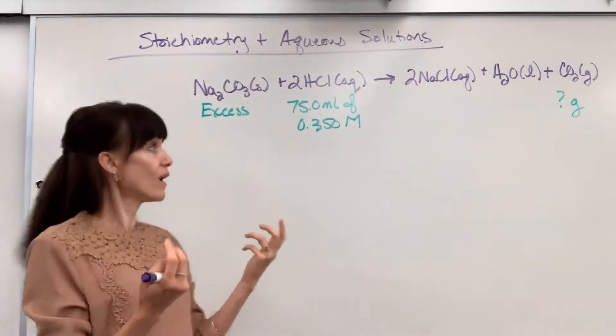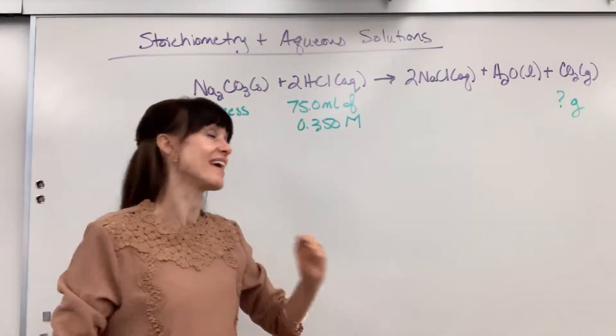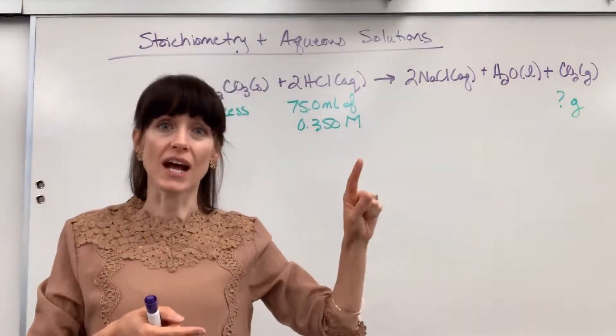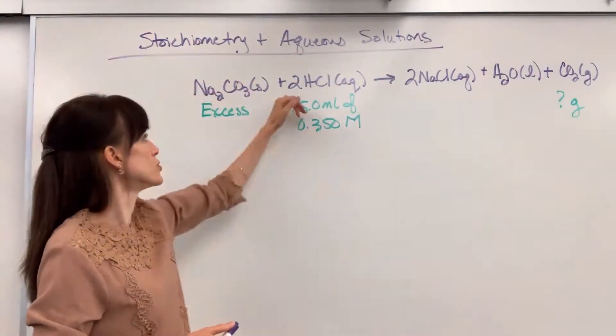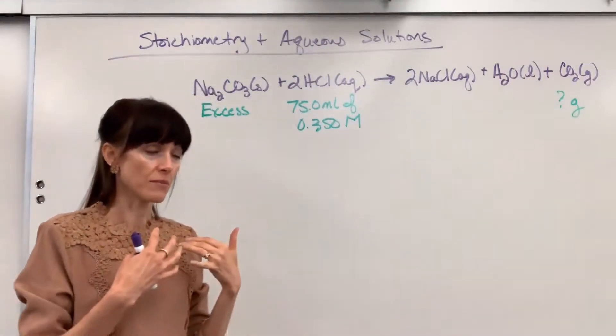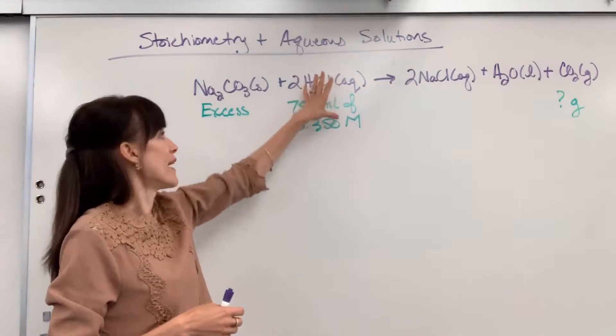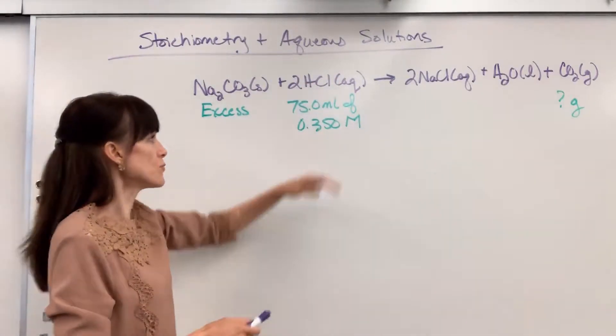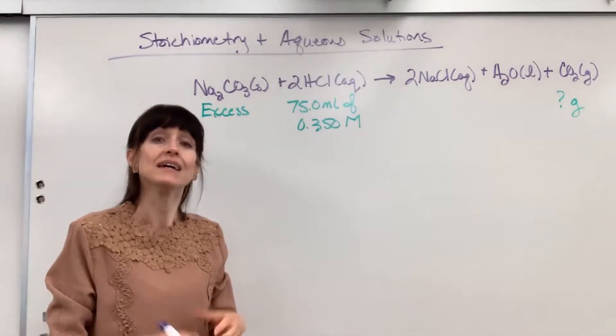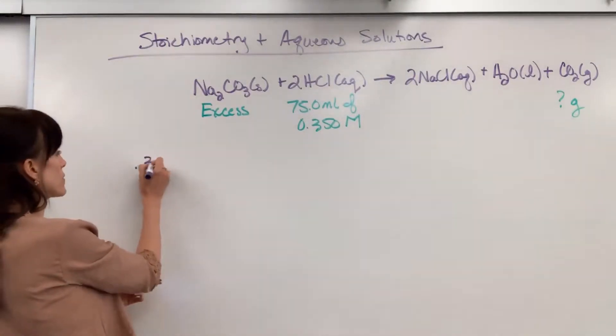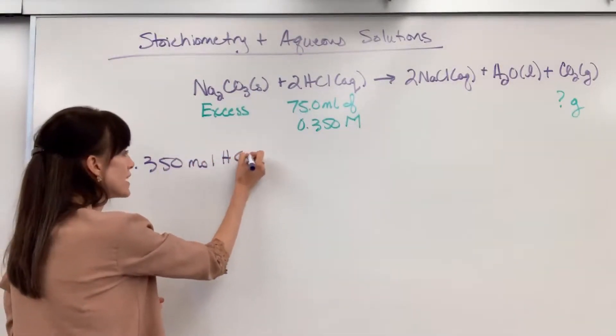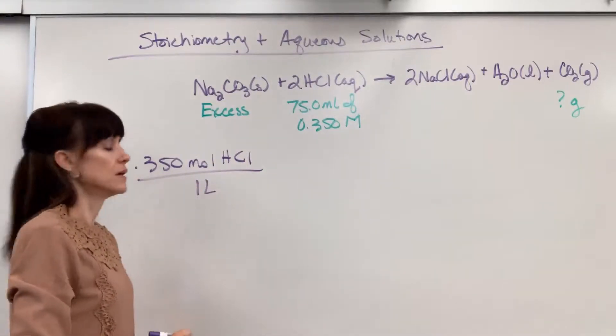So in my head I go, oh they're giving me information about HCl but they want the answer, the amount of carbon dioxide. I have to walk the bridge. I have to use the molar ratio that two moles of HCl produces one mole of CO2. So with that in my head, I know I need to find moles of HCl. First thing I always do is break out that capital M molarity into its units. That is 0.350 moles of HCl for every one liter.